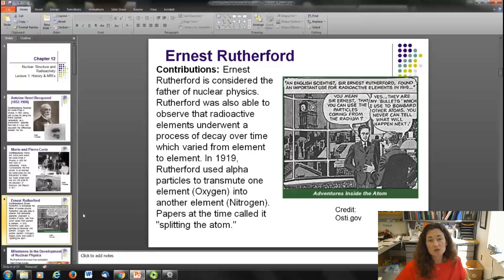Another parent of nuclear physics is Ernest Rutherford. We studied him a lot in Modern One when we talked about the gold foil experiment. He's still considered the father of nuclear physics because of that experiment laying the groundwork for the discovery of the nucleus. He was also able to observe that radioactive elements underwent a process of decay over time which varied from element to element. In 1919, he is said to have carried out the very first nuclear experiment where he transmuted one element, oxygen, into another element, nitrogen. Papers at the time called it the splitting of the atom.